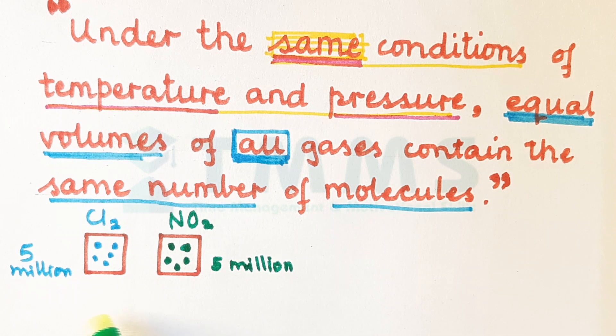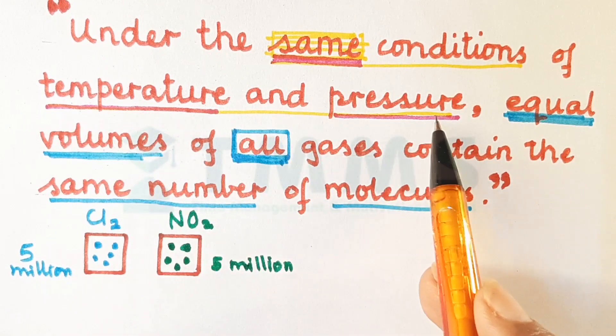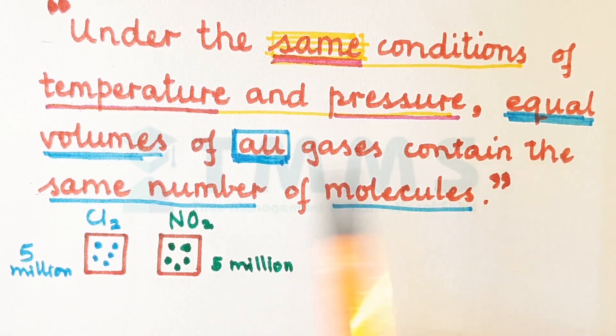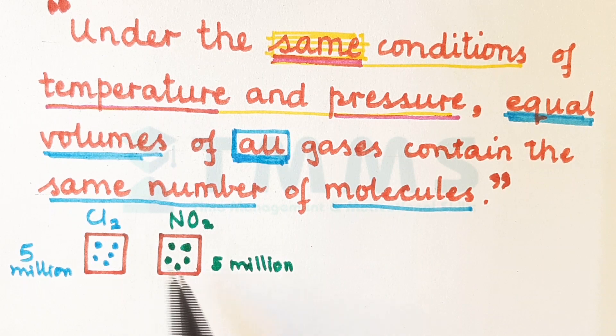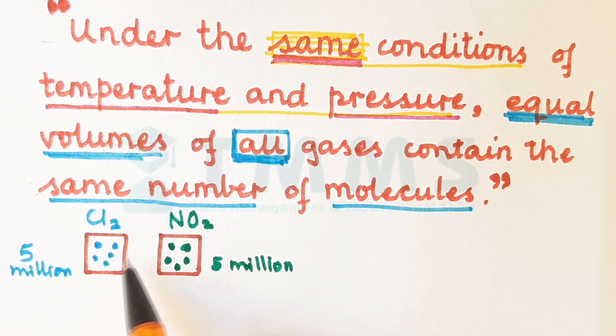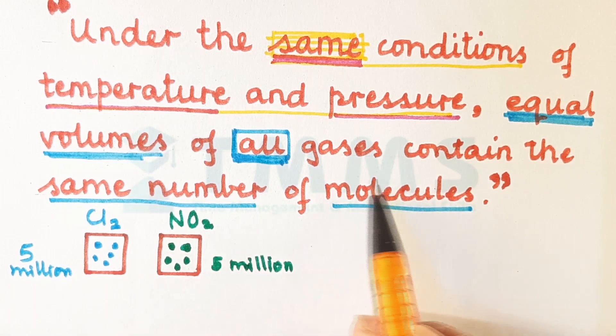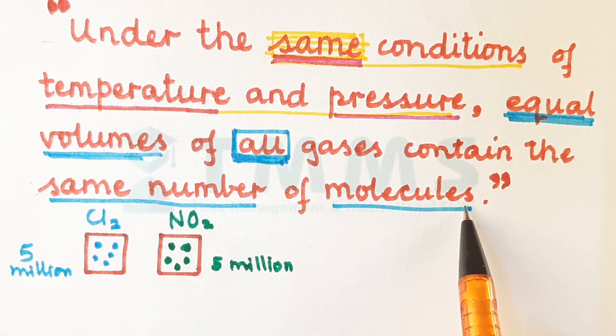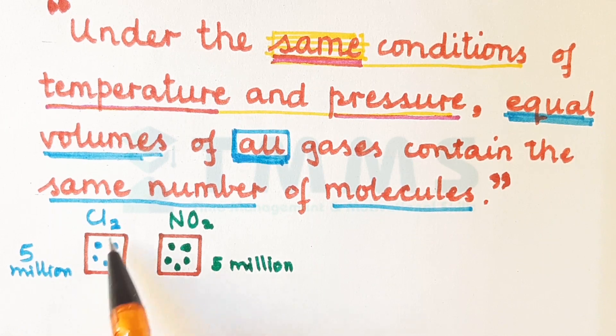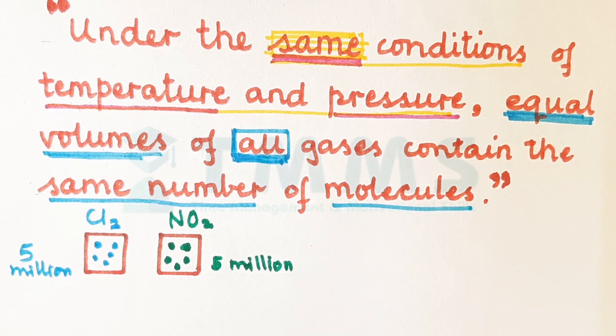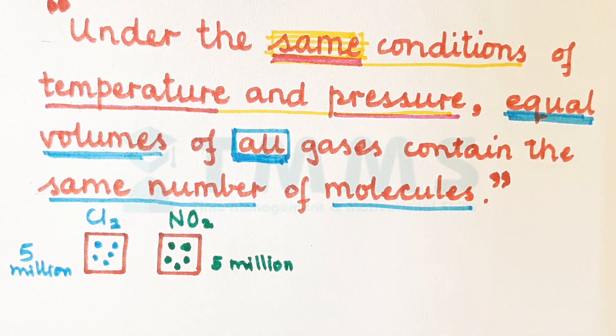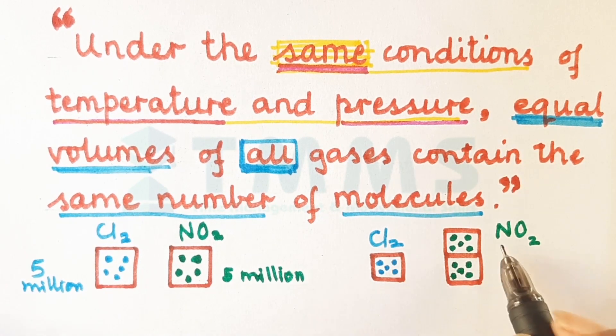So as long as the two containers have the gases at the same temperature and pressure, because that is what our law says. What does our law say? That under the same condition of temperature and pressure, we will have equal volumes of all gases. So we took just two gases and we took the same volumes. So according to the law, each one of them will have the same number of molecules. So if there are 5 million molecules of chlorine, then 5 million molecules of nitrogen dioxide as well will be with the same volume.